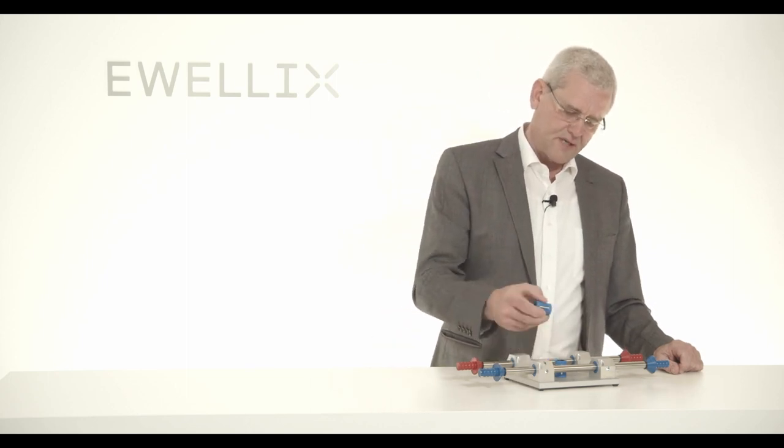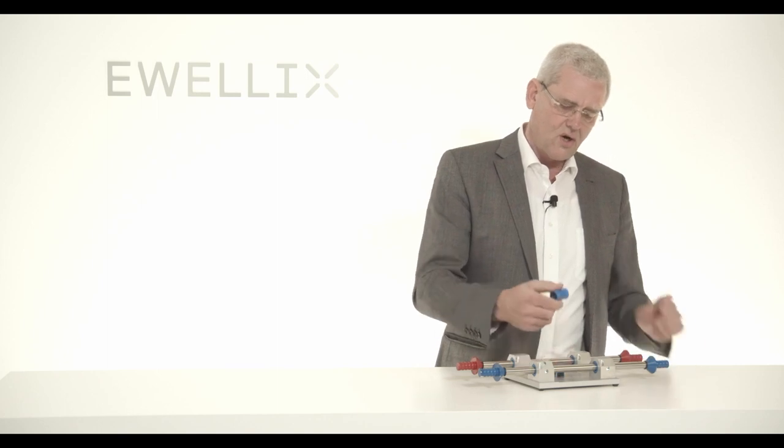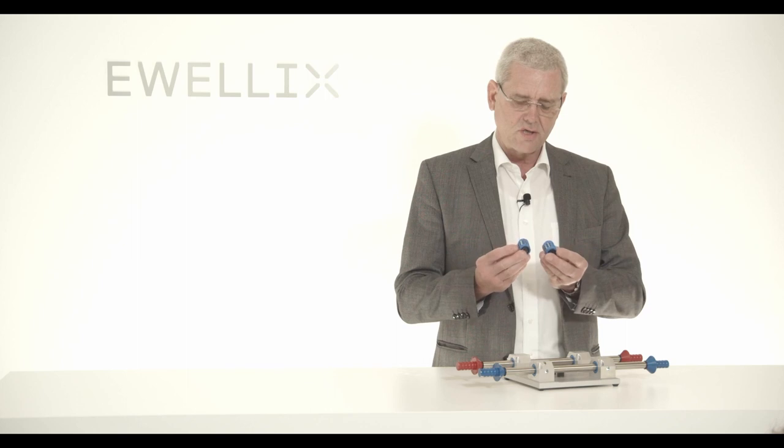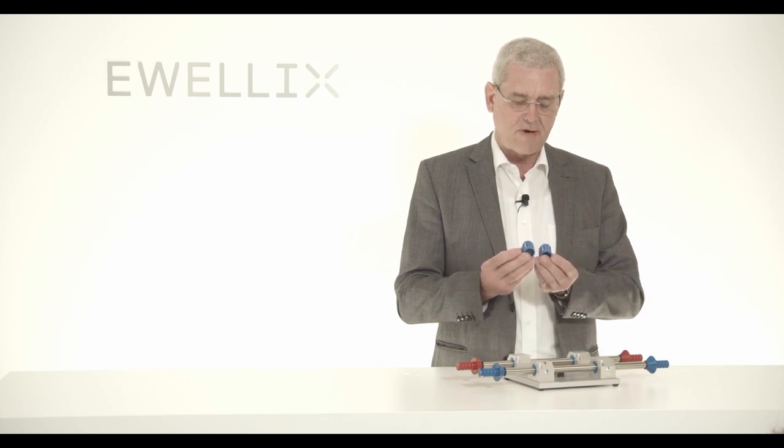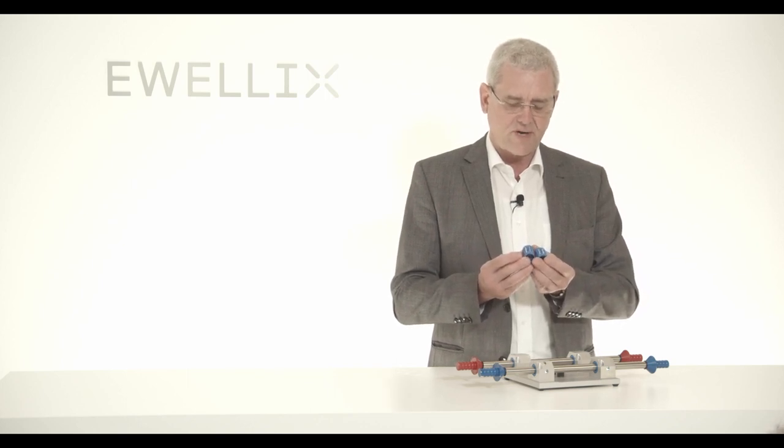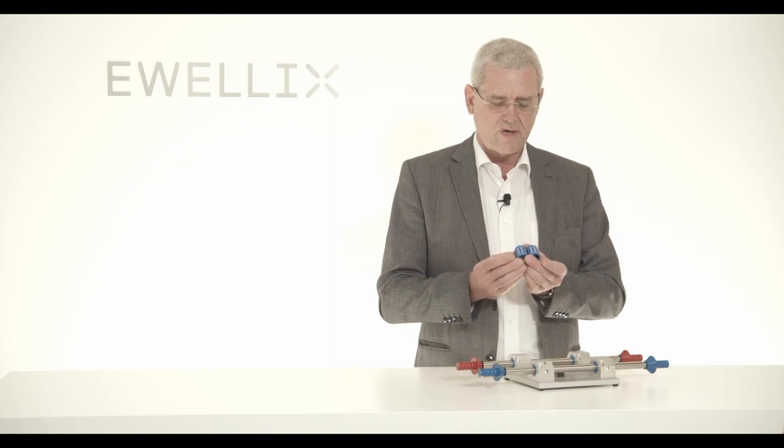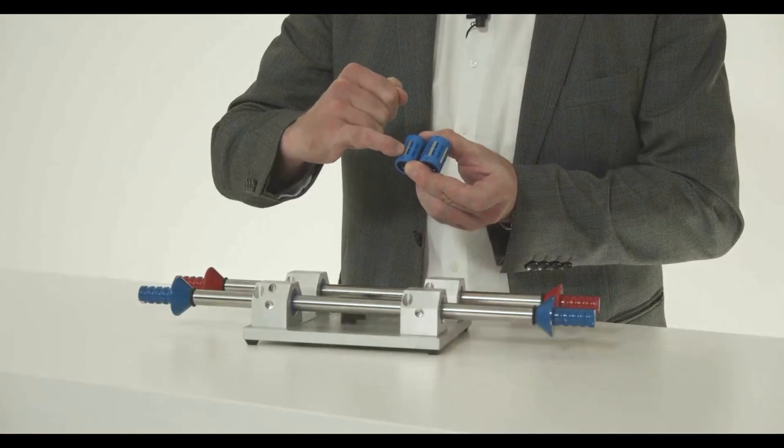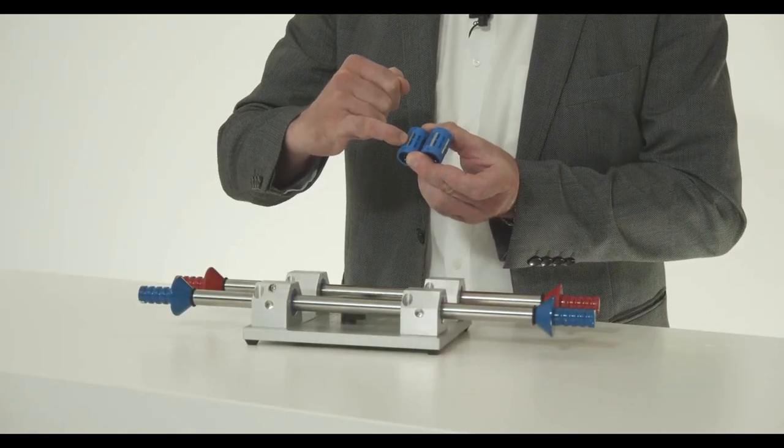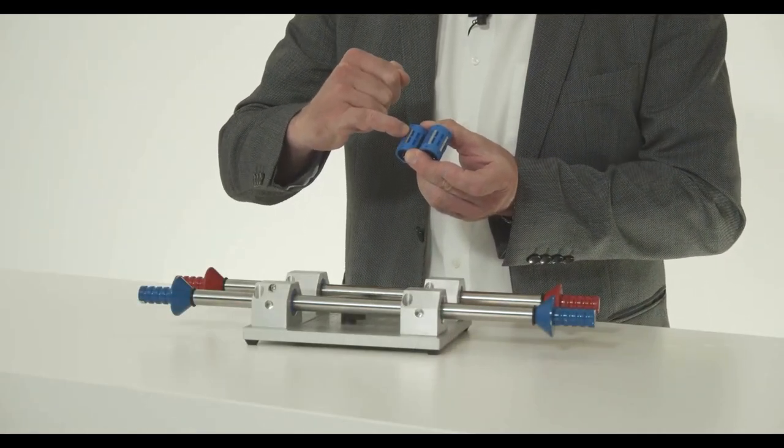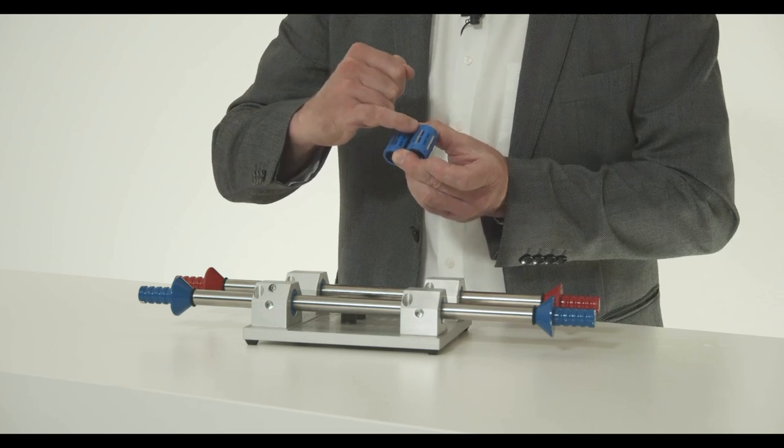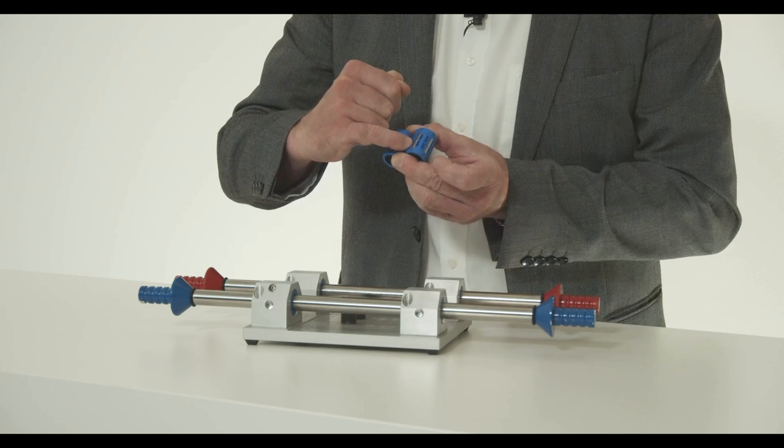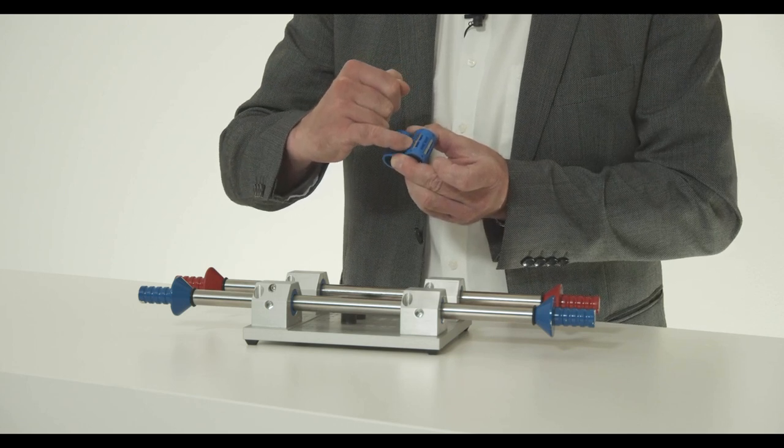Here I have two bearings of the same kind. They have the same cage and same ball tolerance, but they are different in the raceway design. One bearing has a straight raceway with a rigid function for high load carrying capacity, and the other one has the buckle for the self-aligning function of plus minus 30 minutes of arc.